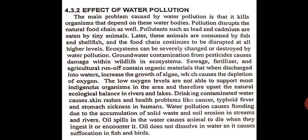The main effect of water pollution is that it kills organisms that depend on these water bodies — for example, fish in a pond will die if a lot of pollutants are released. Pollution also disrupts the natural food chain. Pollutants such as lead and cadmium are eaten by tiny animals, which are then consumed by fish and shellfish, and the food chain continues to be disrupted at all higher levels. Nowadays, some fish are found to contain measurable amounts of pollutants.